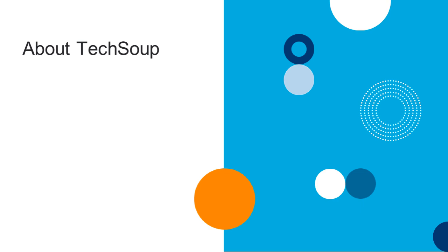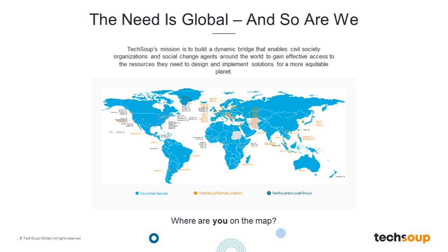Just a little bit about TechSoup if you are not already familiar with us. We are present everywhere on this map that is blue — pretty much all around the world — running events like this, running meetups in person through our NetSquared meetups in cities around the world, and helping to be that bridge between civil society and social change agents with the corporate sector and technology.